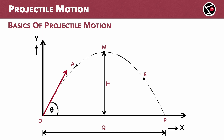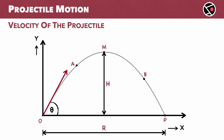We will now take a closer look at the velocity. Velocity is the key to understanding projectile motion. The initial velocity of the projectile is U. The projectile is launched at an angle theta, so we split the velocity into two parts: U cos theta in the X direction, and U sin theta in the Y direction.